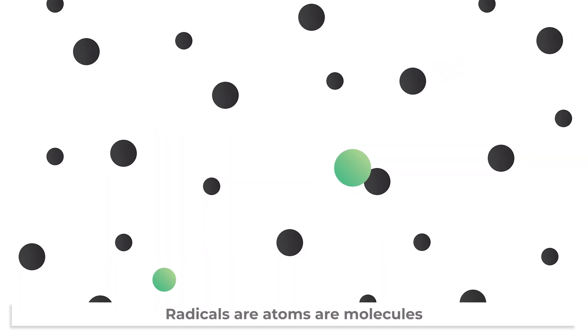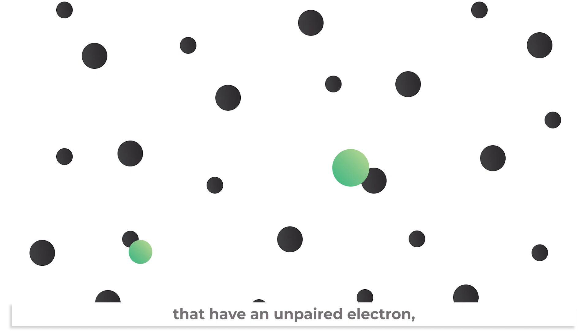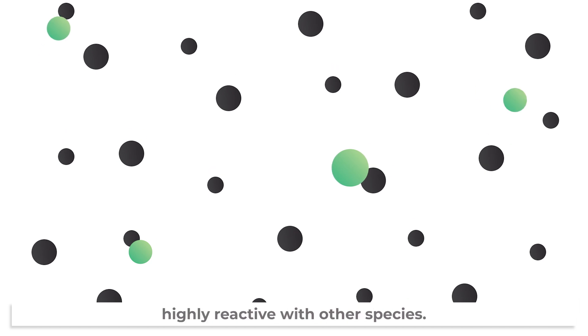Radicals are atoms or molecules that have an unpaired electron, meaning that they are often highly reactive with other species.